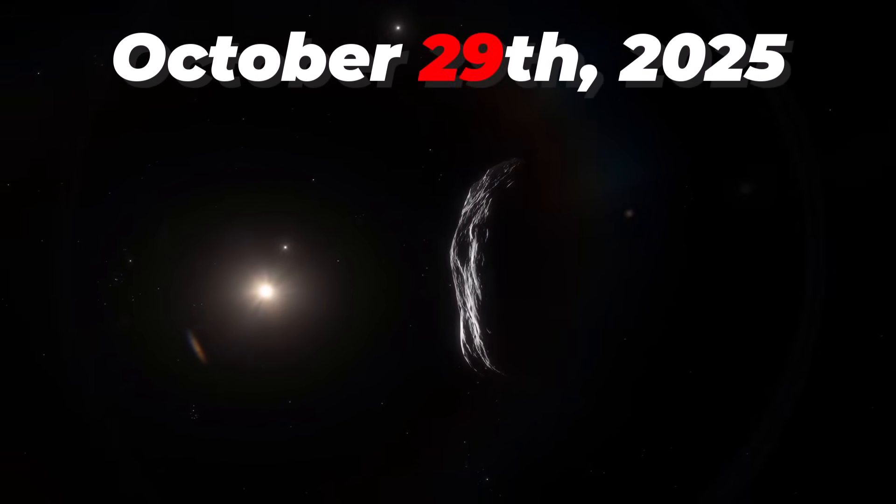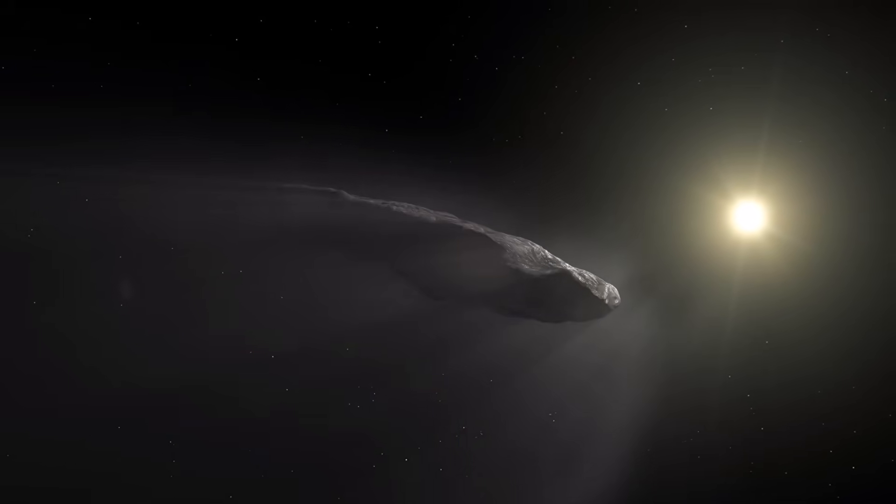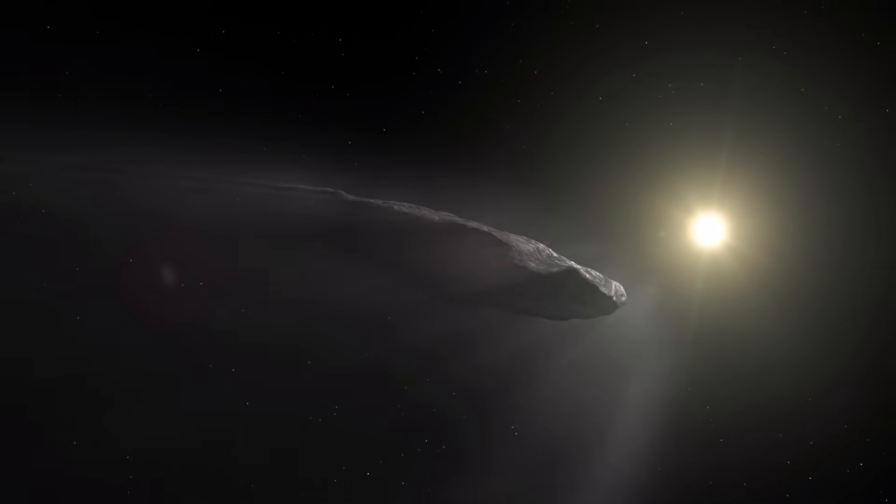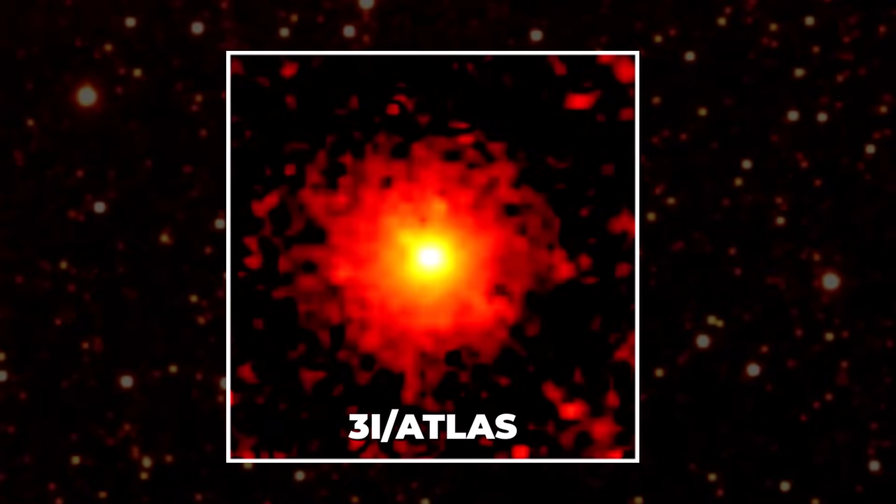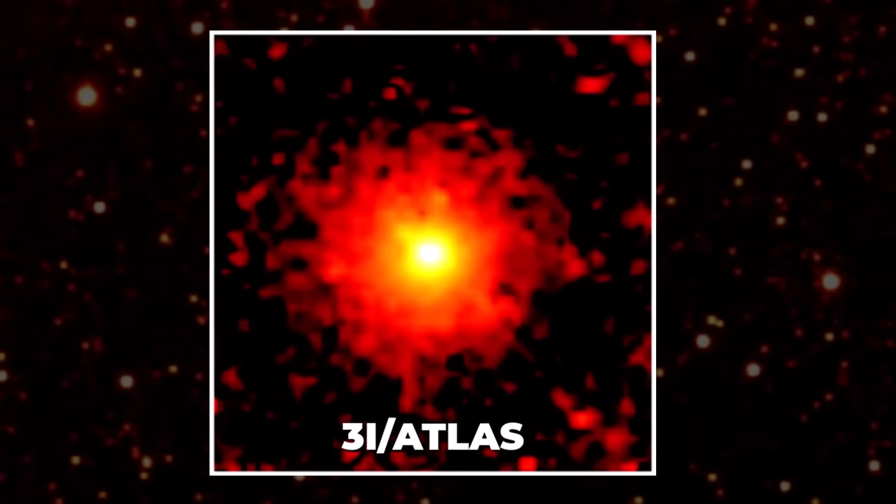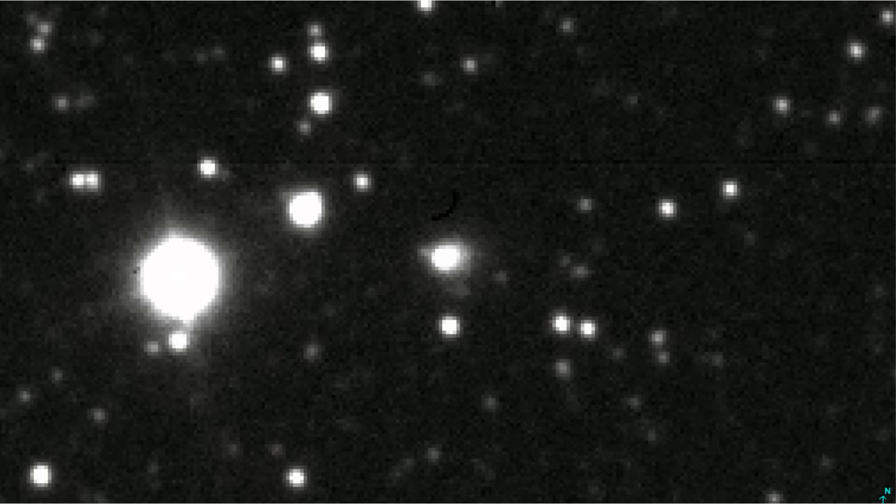October 29, 2025. Mark that date on your calendar, because on that day, an object from beyond our solar system will make its closest approach to our sun. It's called Three-Eye Atlas, the third interstellar visitor ever confirmed by humanity, a traveler from a distant, unknown star.